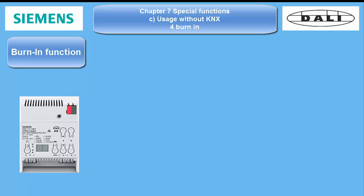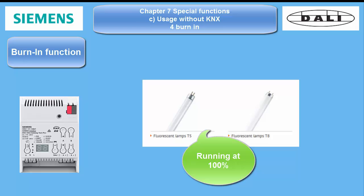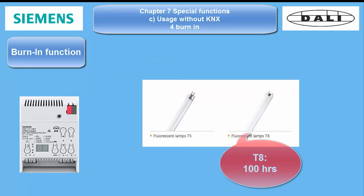Burn-In for Illuminance: Fluorescent tubes should be burned in to reach their highest performance level. Burning in means running the tubes at 100% uninterruptedly for a minimum period of time. The recommended burn-in time is 20 hours for T5 tubes and 100 hours for T8 tubes.